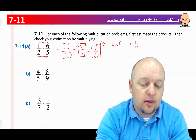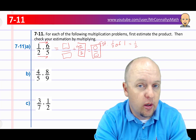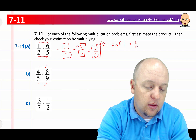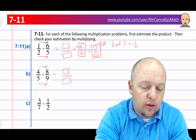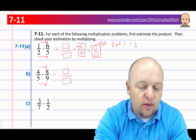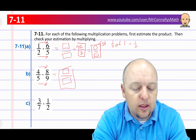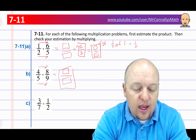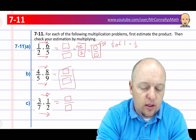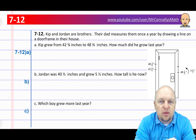For B, we've got 4 fifths times 8 ninths. 8 ninths is close to 9 ninths — it's almost one whole — so our answer would probably be about 4 fifths. Multiplying across: 4 times 8 is 32, 9 times 5 is 45. There are no even numbers on the bottom, so no easy common factor — 32 over 45 is the final answer, no reduction needed. For C, 3 sevenths times 1 half: 3 times 1 is 3, and 7 times 2 is 14. There's no common factor, so 3 over 14 is the final answer. Pause if you need more time.